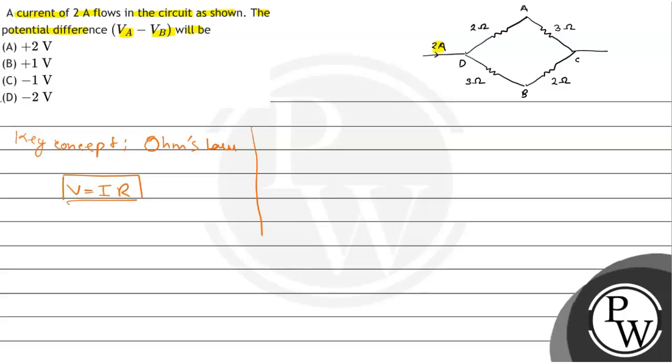Now, let us solve the question. We can see that the current 2A is dividing into two parts. Let us say it is I2 here and I1 here, right. So, 2A equals I1 plus I2.